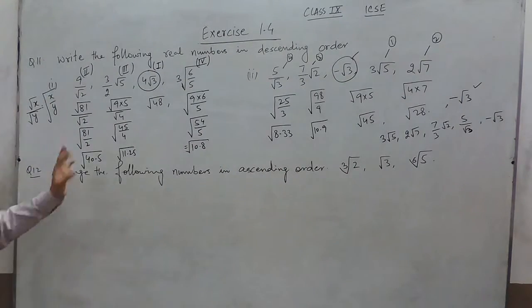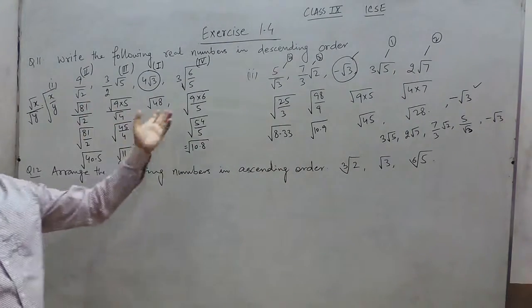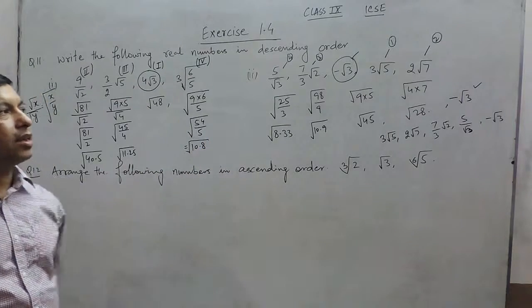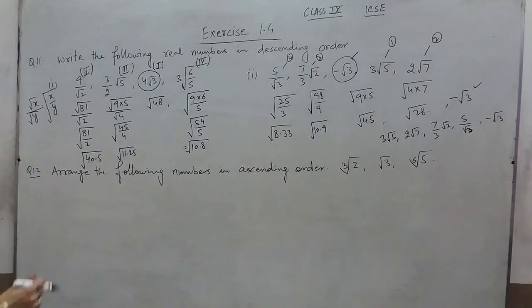So there are two ways to solve these problems: one is converting to under-root form as shown, and the other is finding approximations and then comparing.